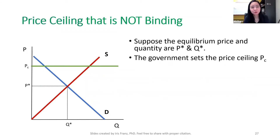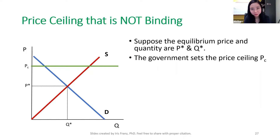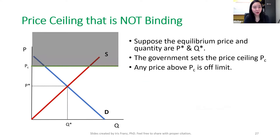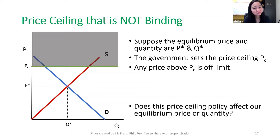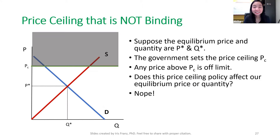Now we're going to look at the price ceiling that is not binding. Look at this diagram. We have our equilibrium price and quantity, P-star and Q-star. Suppose the government sets a price ceiling PC — that means any price above PC will be off limits, so any gray area we cannot go there. Our price is P-star and our quantity is Q-star, so does it affect our market? The answer is no, it does not affect our market.